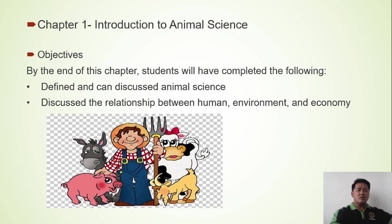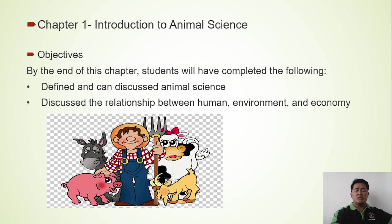The objective of our Chapter 1 is that you, the students, will have completed the following. You can now define and discuss animal science. You can discuss the relationship between human, environment, and the economy. That's what we are hoping to achieve after discussing this chapter.